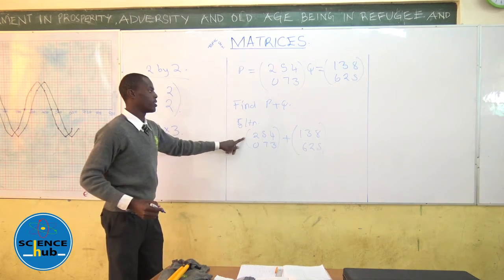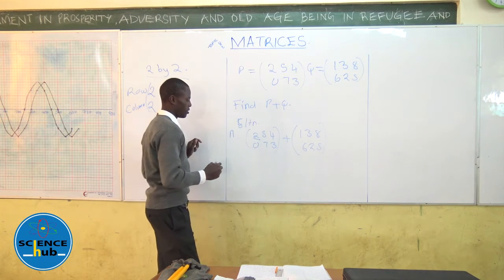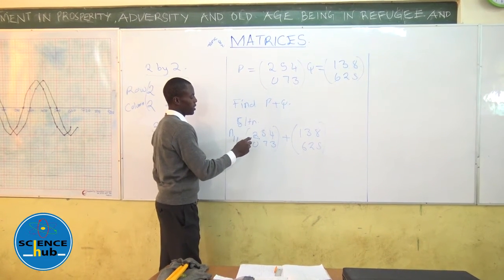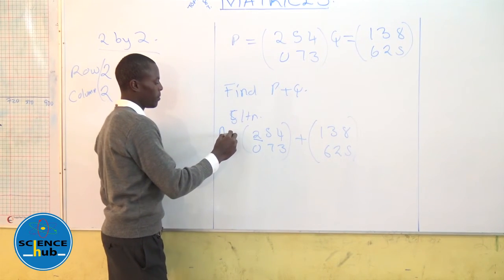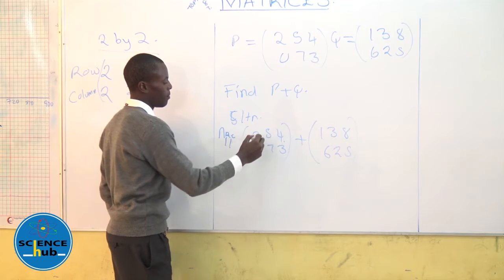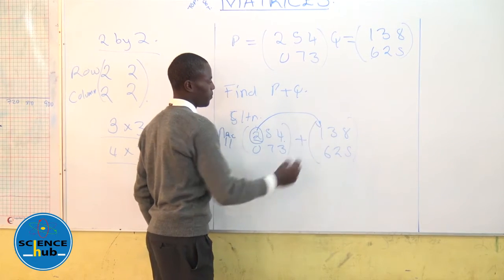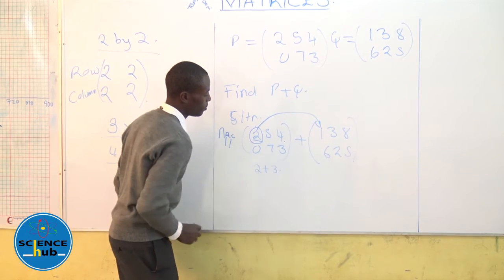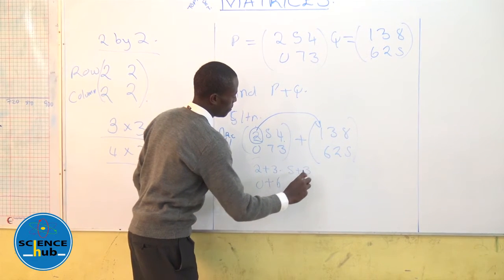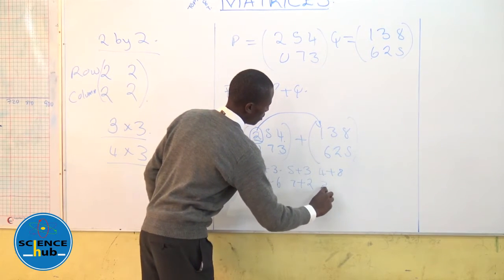In addition and subtraction of matrices, we take the element in the first row, first column of the first matrix. In the first row, first column, our matrix value is 2. Hence in addition we take 2 plus 1, then the second element will be 0 plus 6, then 5 plus 3, then 7 plus 2, then 4 plus 8, then 3 plus 5.